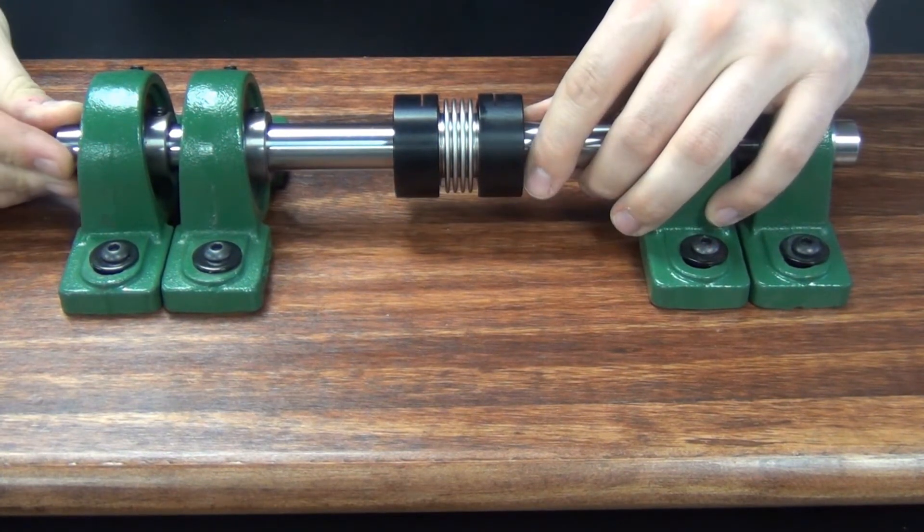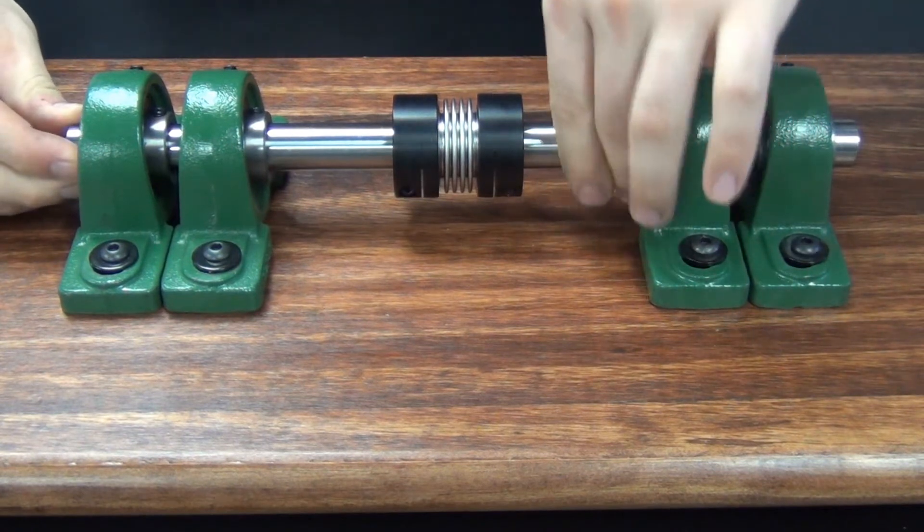Before we tighten the screw on the second hub, we need to rotate the coupling by hand to allow it to reach its free length.